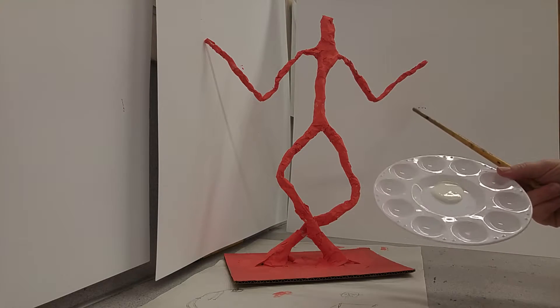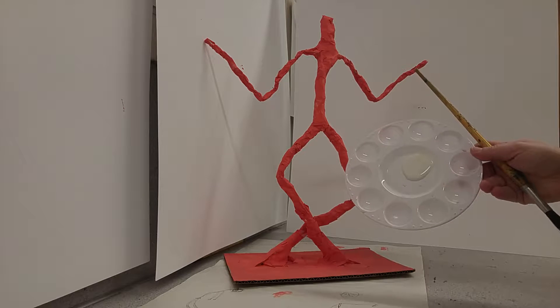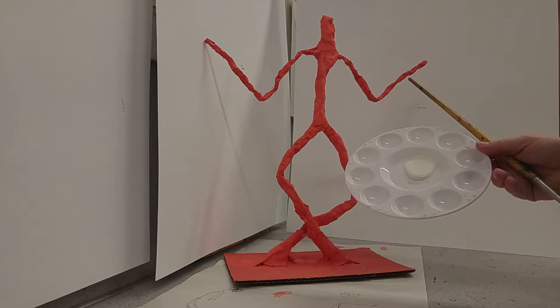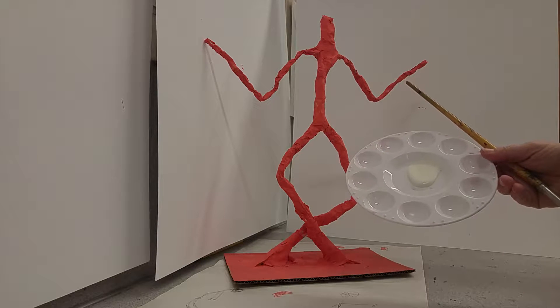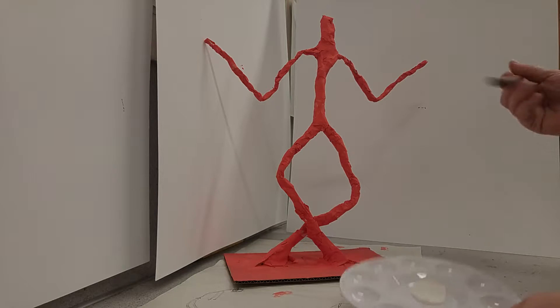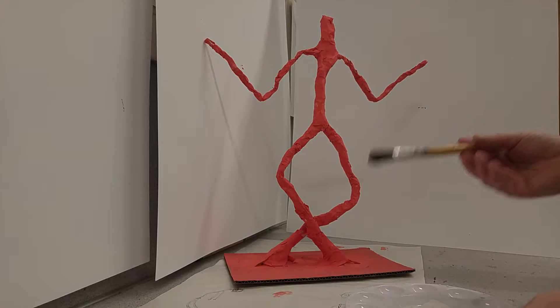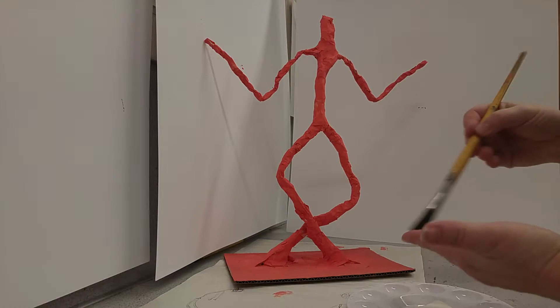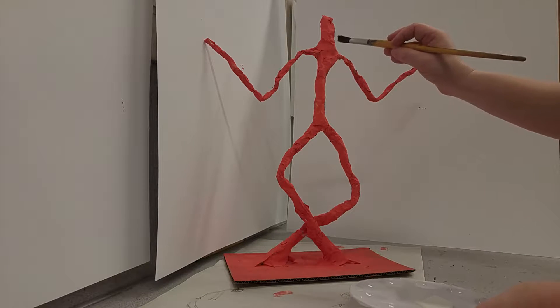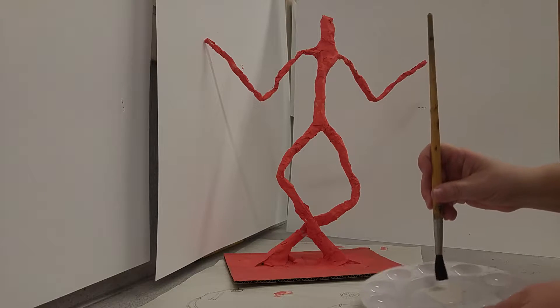You're going to choose a neutral color, the color I chose was white, and not use a whole lot of paint, just a couple squirts is good enough. You're going to use a flat, hard bristle brush, and you're just going to do this technique called dry brushing.